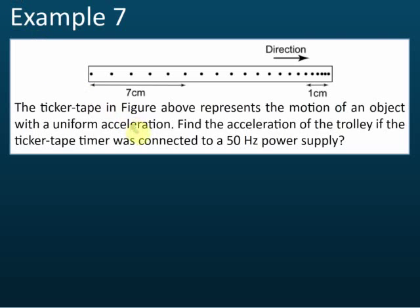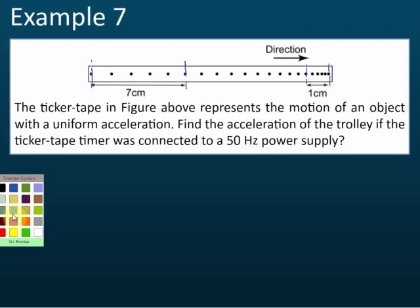This question wants you to find the accelerations. The directions of motion show this is the initial and this is the final. Let's draw the line here because that is the length that we use to find the final and initial velocity.